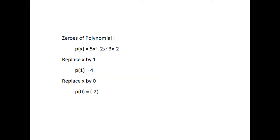Zeros of a polynomial. Consider the polynomial p of x equal to 5x cubed minus 2x squared plus 3x minus 2. If we replace x by 1, then we get p of 1 equal to 4. Therefore, the value of p of x at x equal to 1 is 4. Similarly, p of 0 equal to minus 2.